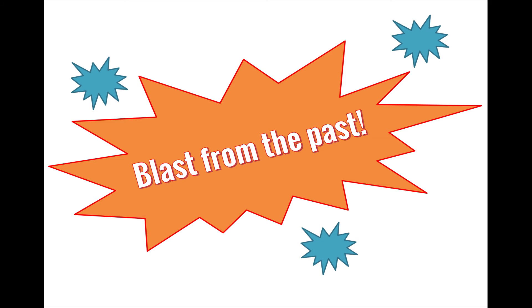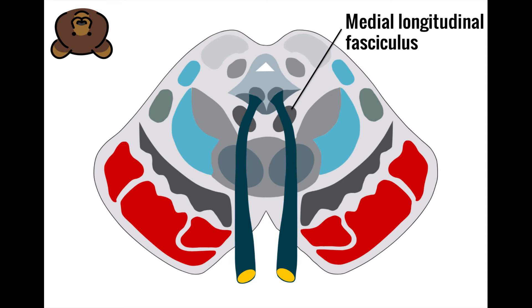Tired of blasts from the past yet? I hope not, because there's more. Let's talk about another structure involved in eye movement that has a name that is quite the mouthful, the medial longitudinal fasciculus, or MLF, which we first covered in the video on the brainstem.